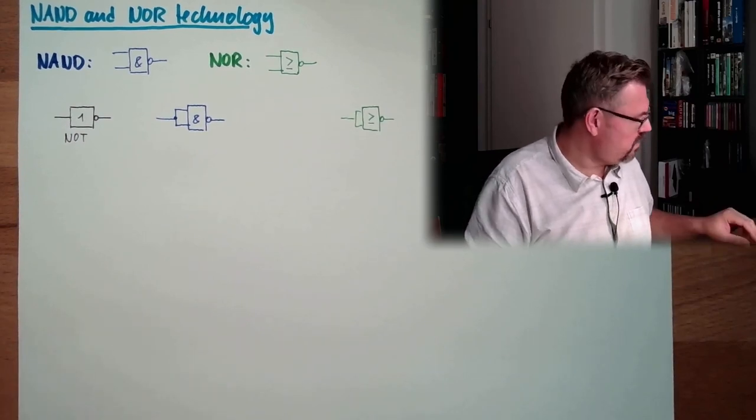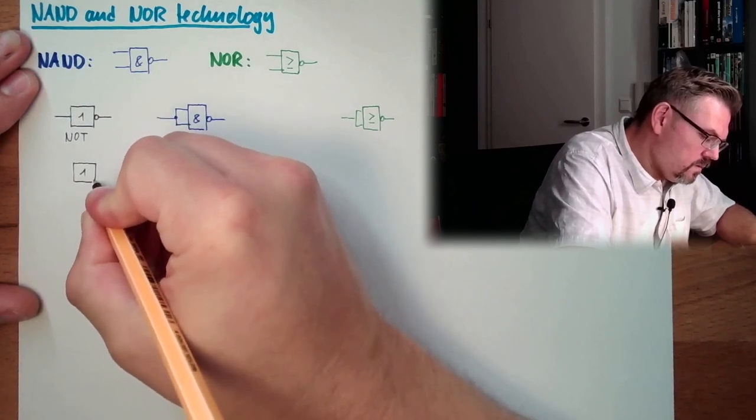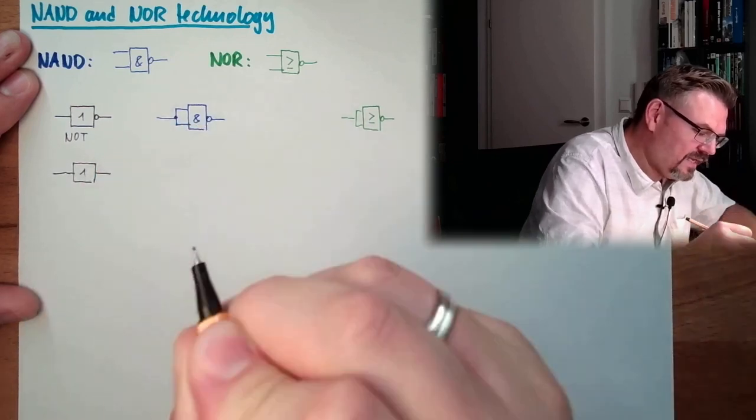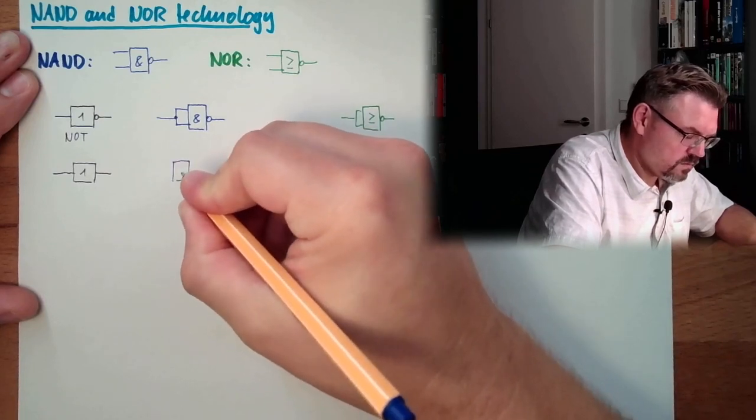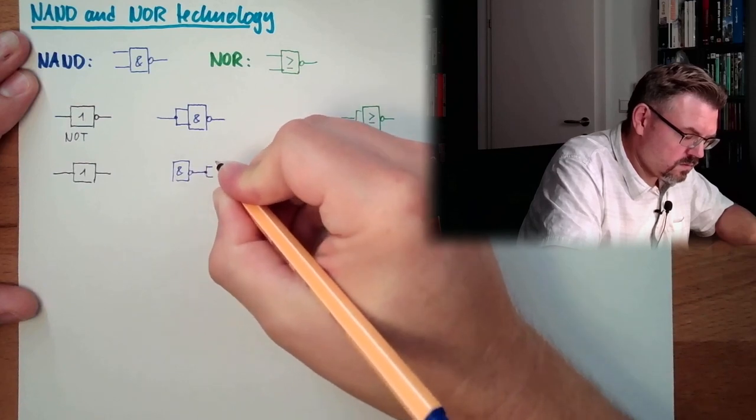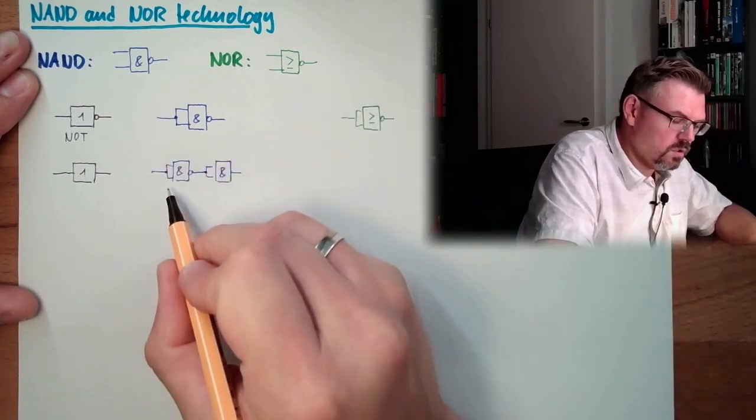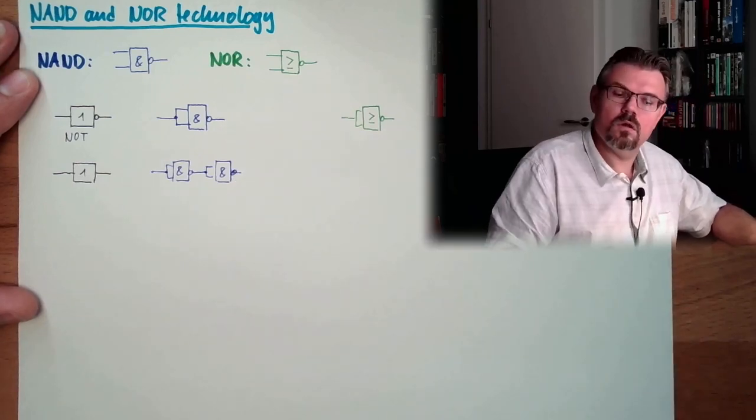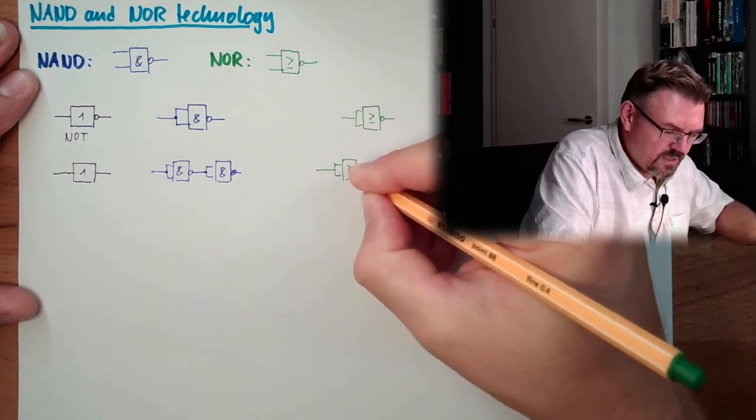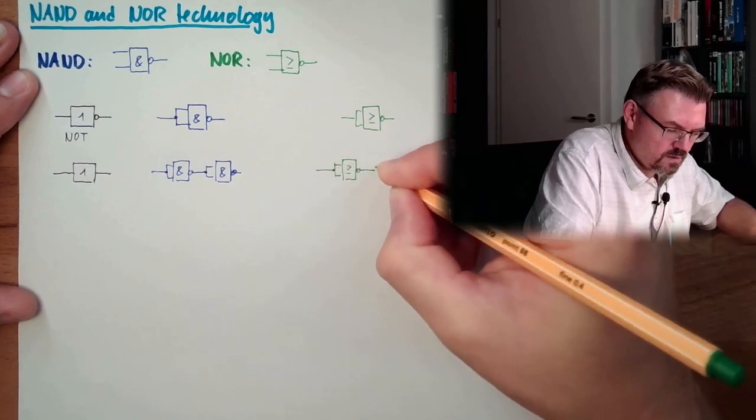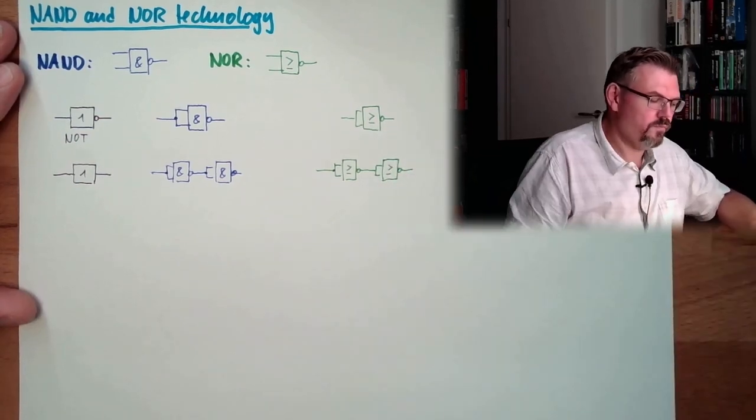Good. And now, let's talk about an identity. So we want to have exactly the same, exactly the same. So to realize this, we have to use two times. NOT, NOT, NOT, NOT, is again the original signal. And here it's working exactly the same, this is an identity.